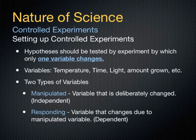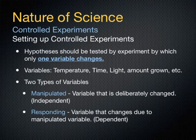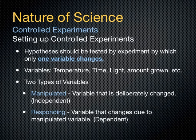In setting up controlled experiments, we always have the hypothesis stated as if-then. Hypotheses should be tested by changing only one variable. If soil temperature rises, then plant growth will increase — only one thing is changing: the soil temperature. What responds to that is called plant growth. Types of variables you can use include temperature, time, light, amount grown, how fast an object is traveling, and many more. There are actually three types of variables.